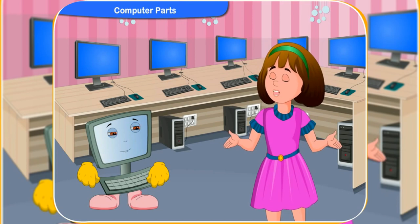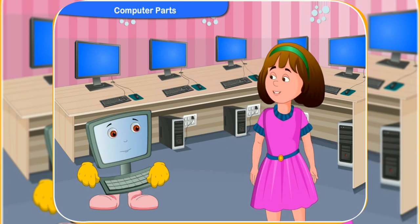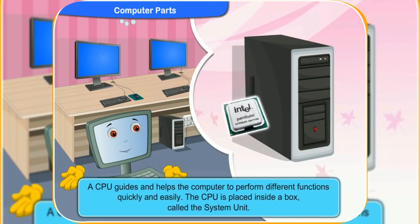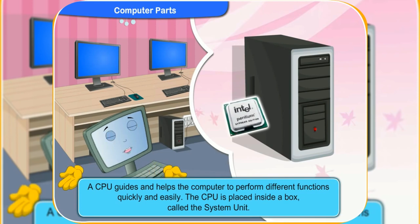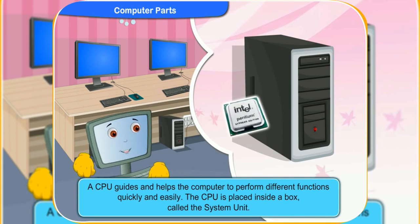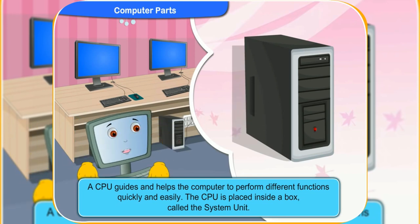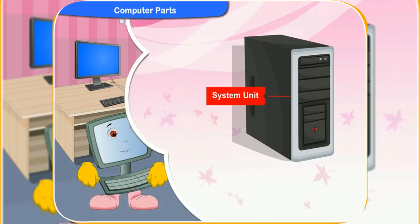What does a CPU do in a computer, Clicko? A CPU guides and helps the computer to perform different functions quickly and easily. The CPU is placed inside a box called the system unit.